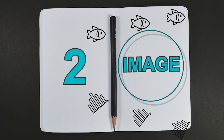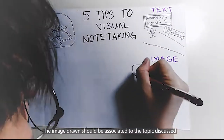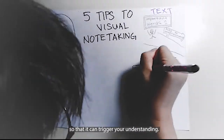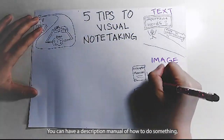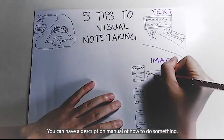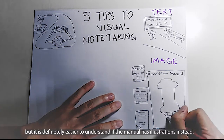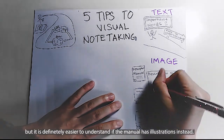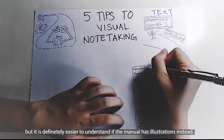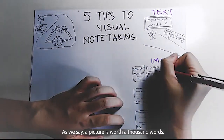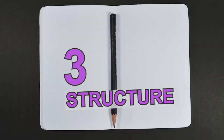Next is image. The image drawn should be associated with the topic discussed so that it can trigger your understanding. You can have a description manual of how to do something, but it is definitely easier to understand if the manual has illustrations instead. As we say, a picture is worth a thousand words.